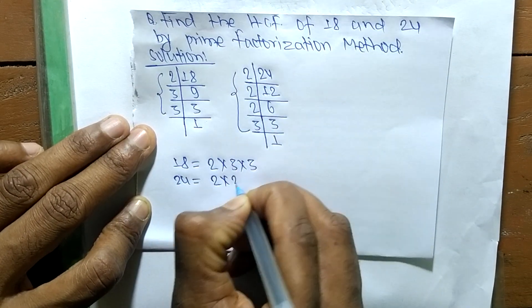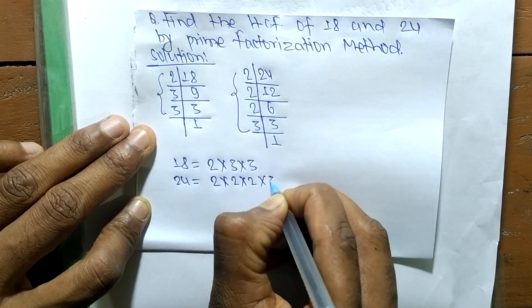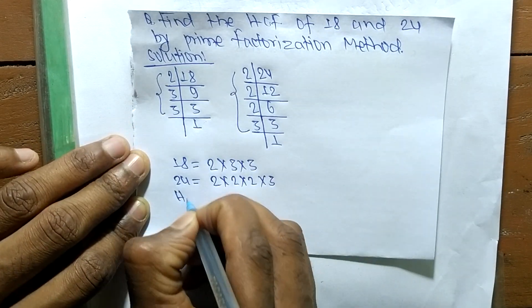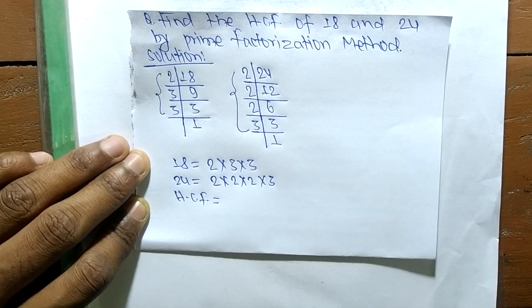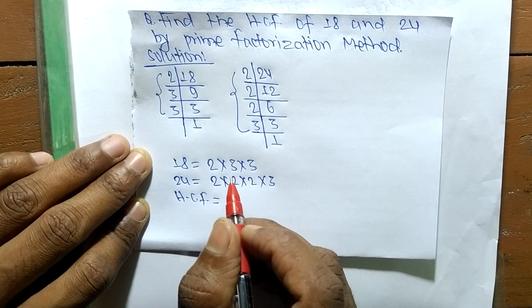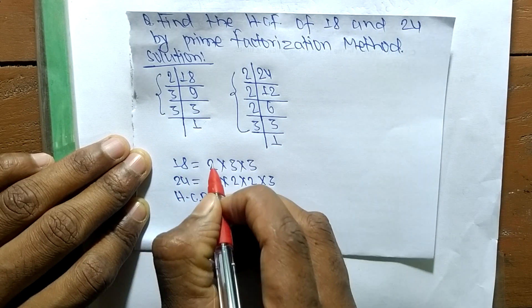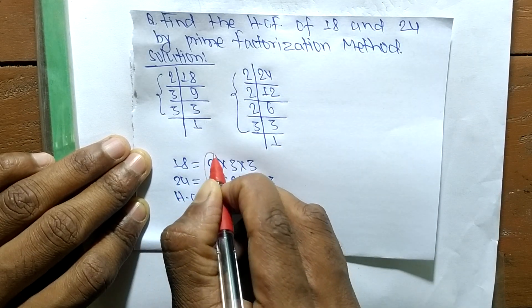So the HCF is equal to the common factors in the prime factors of 18 and 24. Now we have to find out the common factors. The first common factor here is 2.